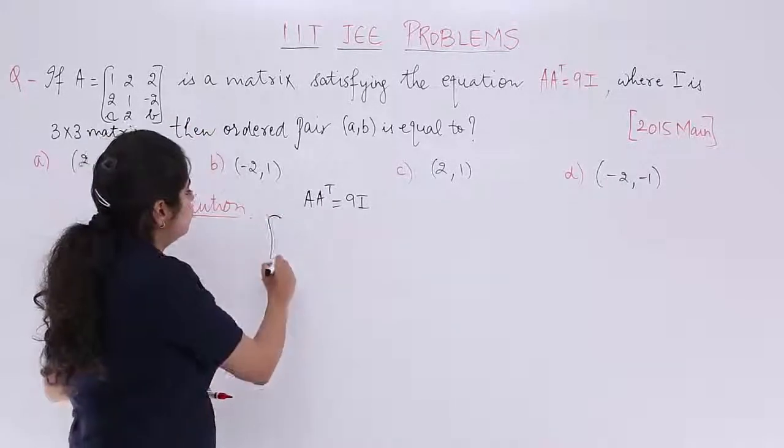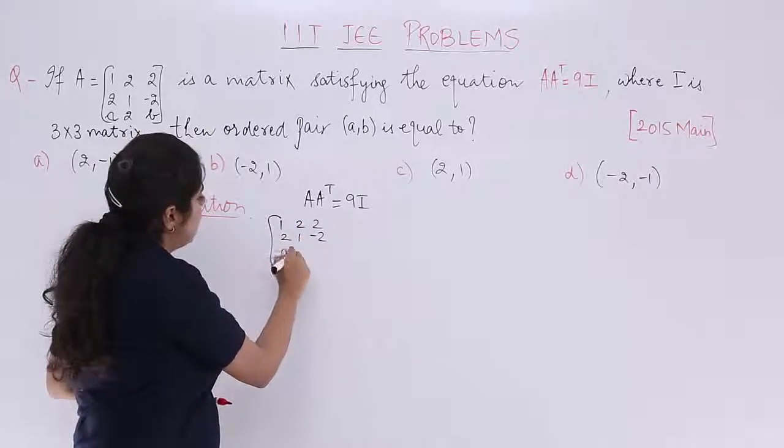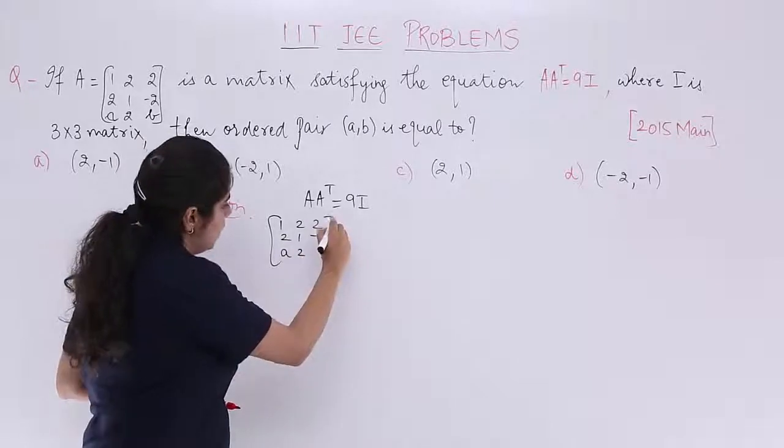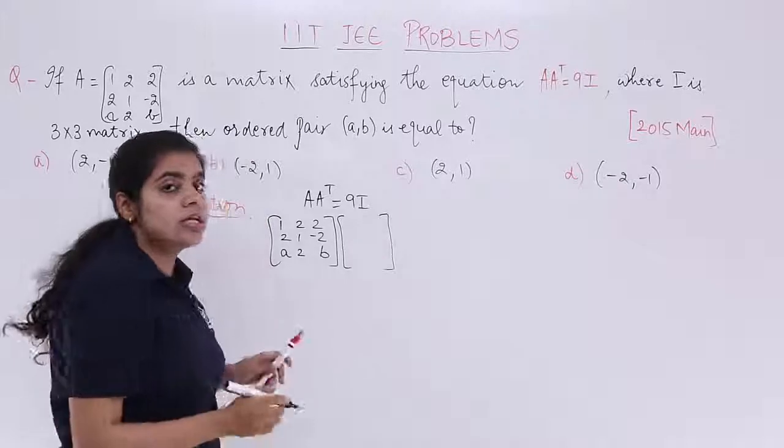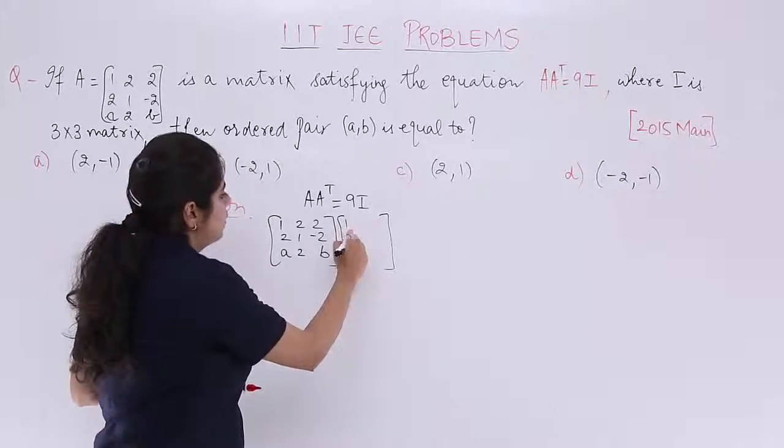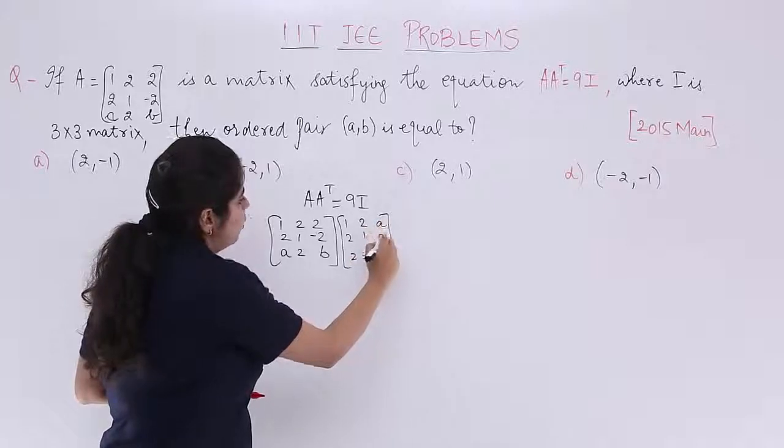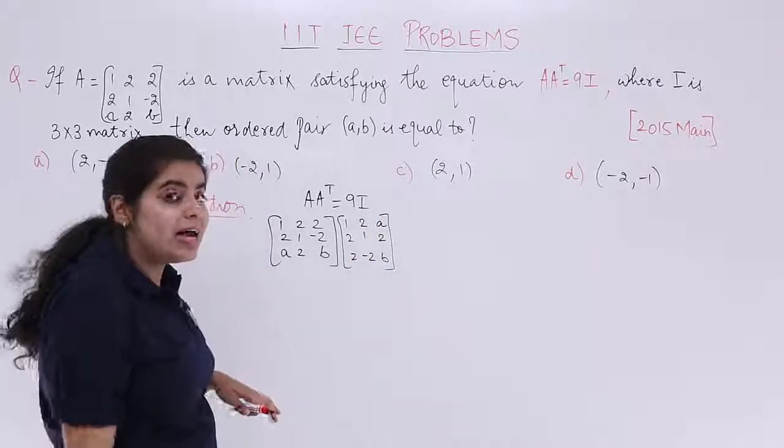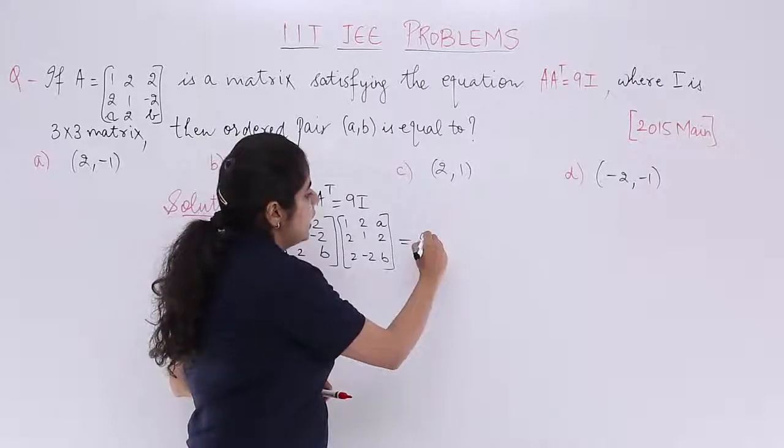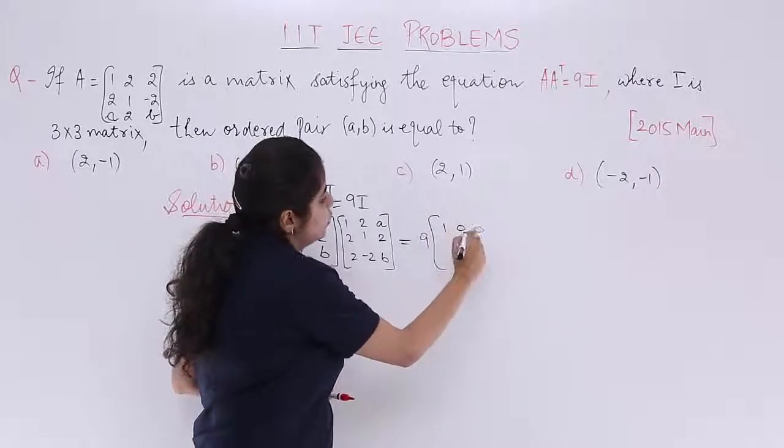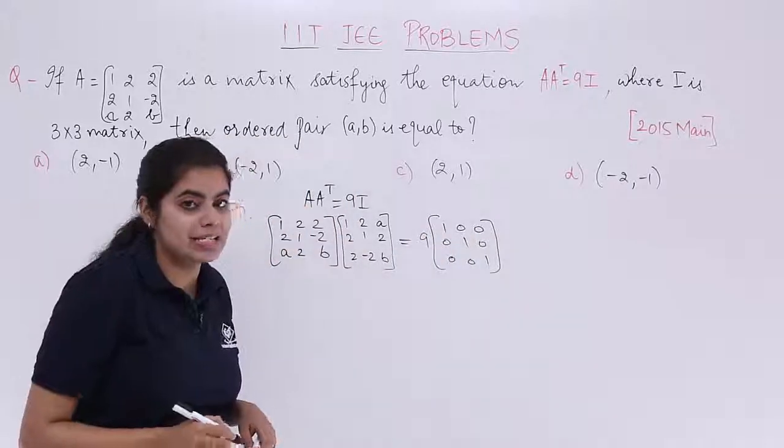Now what is matrix A? It is 1, 2, 2; 2, 1, minus 2; A, 2, B. What is A transpose? Both these are to be multiplied so you need to write A transpose. The first row becomes first column, second row becomes second column, third row becomes third column, and it is equal to 9I. You know the story behind identity matrix already.